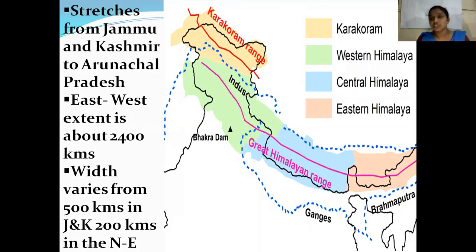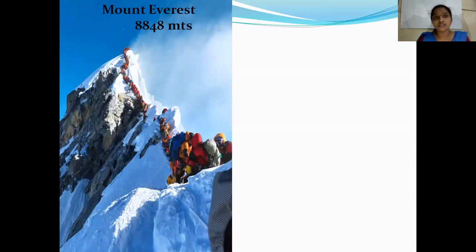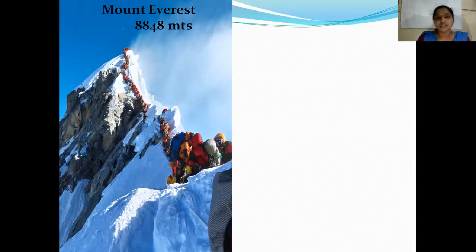In the northern mountains, we have the highest mountain peaks. One is Mount Everest, which is located in Nepal. Mount Everest is the highest mountain in the world. The topmost area of a mountain is called a peak. The height of Mount Everest is 8,848 meters.